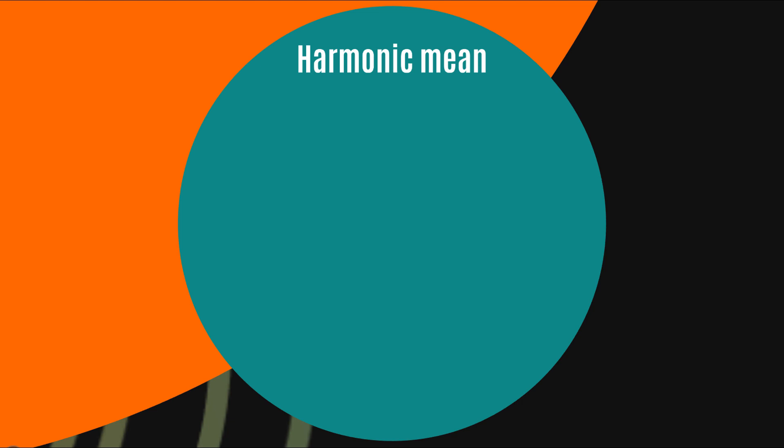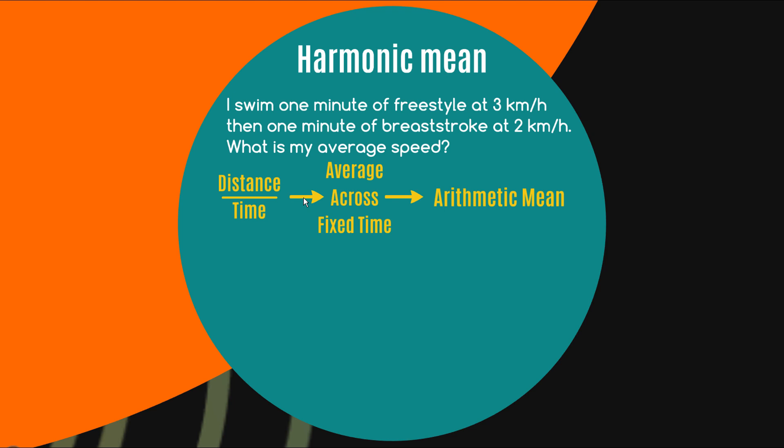So let's have a look now at harmonic means now harmonic means are used predominantly when you're dealing with rates and one of the more common rates that you'll come across is that of speed which is the rate of distance over time. So here's a little example if I say I swim one minute of freestyle at three kilometers an hour and then one minute of breaststroke at two kilometers an hour what's my average speed? You'd be able to tell me that almost straight away that my average speed is 2.5 kilometers an hour why is that? Well we can see the two speeds here and they're given as distances over time and we're averaging out across a single unit of time in each case right.